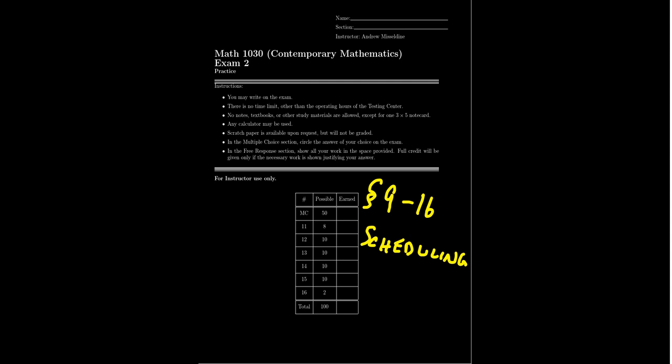Lessons 13 through 16 cover fair division — a branch of financial mathematics where individuals have equal ownership of a collection of assets and we must fairly distribute them so every player receives at least their fair share. For example, if two people share an asset worth a thousand dollars, everyone deserves at least five hundred dollars worth of assets. Both topics will be covered equally on this exam.